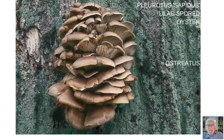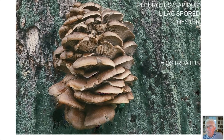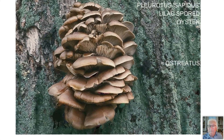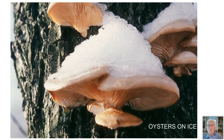That was Pleurotus ostreatus. This next one had been called Pleurotus sapidus — it has different coloration and lilac spores, while ostreatus had white spores. But if you take the spores from this mushroom and the previous one and put them together on a petri plate, they mate. So they know each other — they're the same mushroom, just a different color. That would be what we called a sister species. This mushroom I have found growing every single month of the year at this latitude in the Hudson Valley and the Catskills.